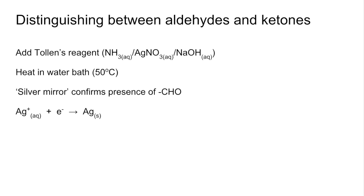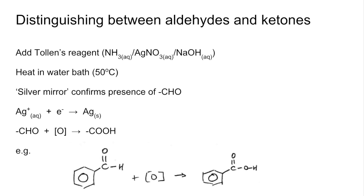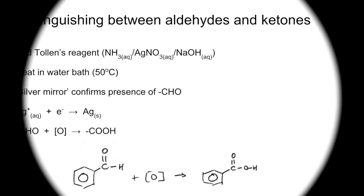The reaction taking place: the silver ions from the silver nitrate gain an electron — they are reduced to silver atoms, forming the silver mirror. The aldehyde group is oxidized to the carboxylic acid group. For example, benzaldehyde would be oxidized to benzoic acid.